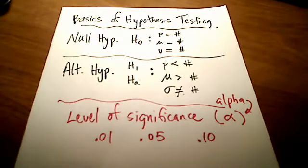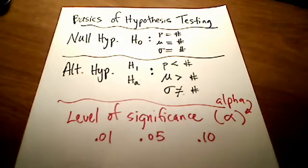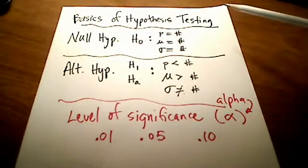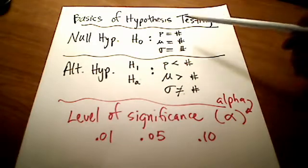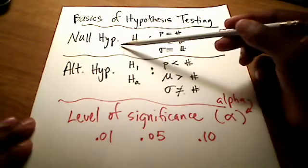I have shown in a separate video the basics of hypothesis testing using the traditional method. So there are two different kinds — probably more than two, but I'm only showing you two in my videos. The basics of hypothesis testing, no matter what method you're using — traditional or p-value — is that there are going to be two types of hypotheses.